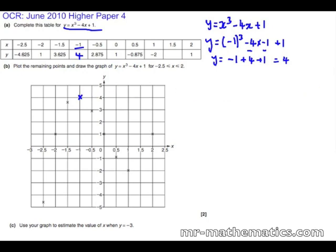And now we'll do the same for x equals 1.5. So y equals 1.5 cubed minus 4 lots of 1.5 plus 1. And that comes out as y equals negative 1.625. And we'll plot that on our graph as well.